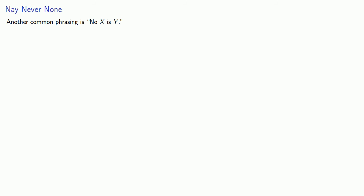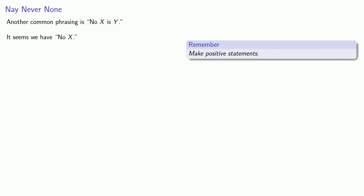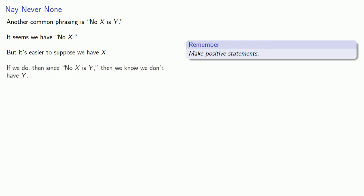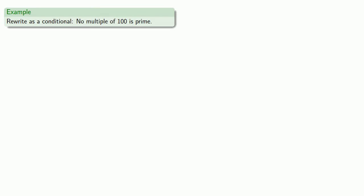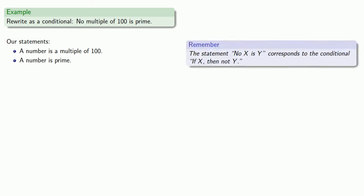Another common phrasing is 'no X is Y.' It's useful to remember we want to make positive statements, so it's easier to suppose that we have X. If we do, then since no X is Y, we know we don't have Y. This gives us the conditional: if X, then not Y. For example, 'no multiple of 100 is prime' — our statements are 'a number is a multiple of 100' and 'a number is prime' — so the conditional is: if a number is a multiple of 100, then it is not prime.